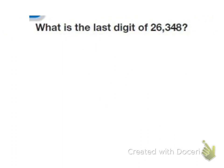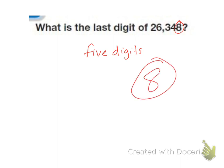What is the last digit of 26,348? Well, this number has five digits. The last digit is going to be the one farthest to the right, and so that's going to be the number eight. The last digit is eight. And that's it for this lesson — good luck on your homework.